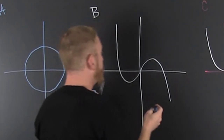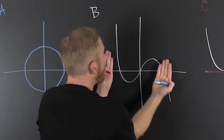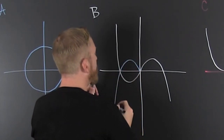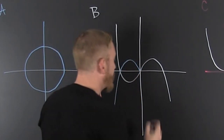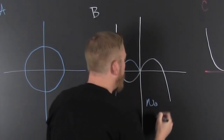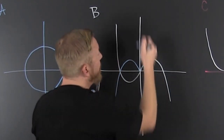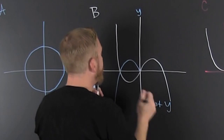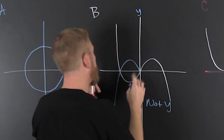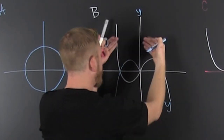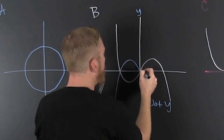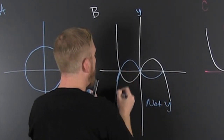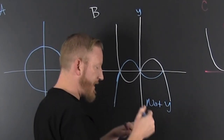Over here, to this middle example. If I flip it on the x — boom — it doesn't lay on itself, so it's not x. This is y — it's not y. If I were to flip it on the x... it's not x.